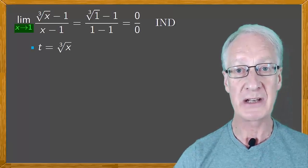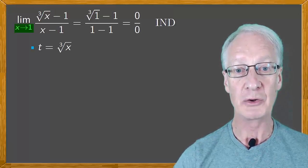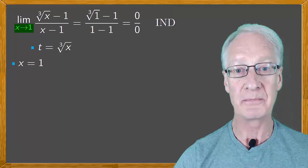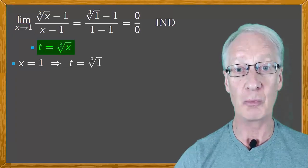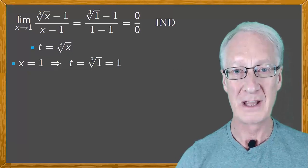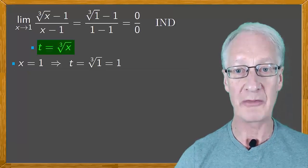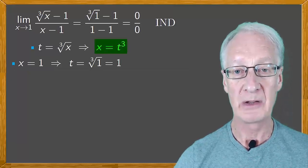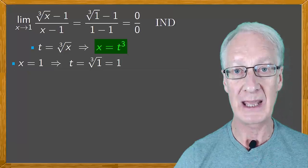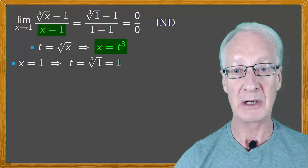Since x tends to 1, we'll look at x equals 1, then put t equal to the cube root of 1, which is 1. Now, if t equals the cube root of x, we have that x is t cubed. So we'll substitute for x in the denominator.